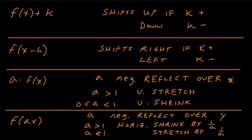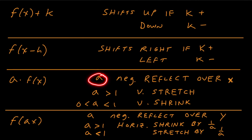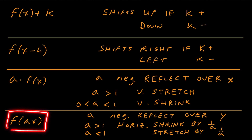The next rule is a times f(x). The a here is not grouped with x — it's on the outside — so it affects the y coordinates. If a is greater than one, say two, it's a vertical stretch by a factor of two, multiplying all y values by two. If a is between zero and one, like one-half or one-third, it's a vertical shrink. If a is negative, it reflects the parent function over the x-axis, making all y coordinates the opposite sign.